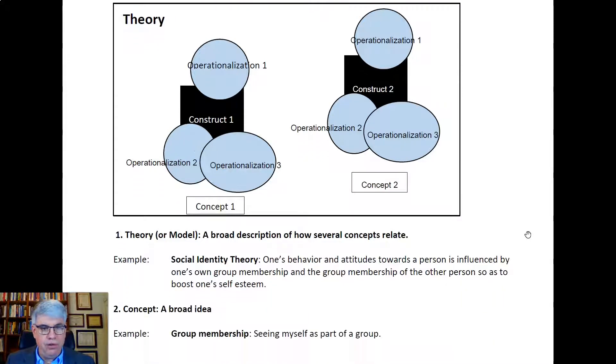Now, if we go to a concept, that would be the parts that are in the theory. We have a concept here: group membership. That's seeing myself as a part of a group, or seeing somebody else as a part of a group. That would be one of the concepts that's involved in this theory.